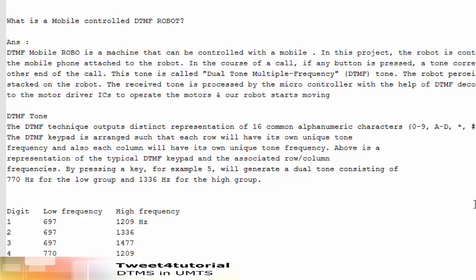In brief, if you are in a call connected with another number — two mobiles are connected and a voice call is in progress — at that time if you are pressing any button like 0, 9, 8, 0, star, the tone corresponding to that button press is heard at the other end of the call. So this is DTMF — the Dual Tone Multiple Frequency.